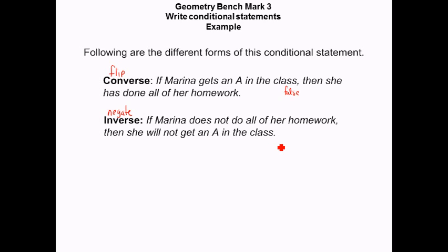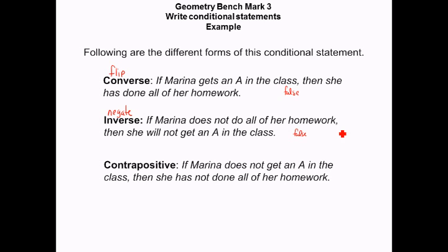The inverse: if she does not do all of her homework, then she will not get an A in the class. It depends on how much the homework is weighted — if the homework is only a tiny piece of her grade, there's a chance she could still get an A. We have to say false because there is an example that makes it not true. The contrapositive — if she does not get an A in the class, then she has not done all of her homework — is flip and negate. The contrapositive and the conditional have the same truth value, so if one's false, so is the other.